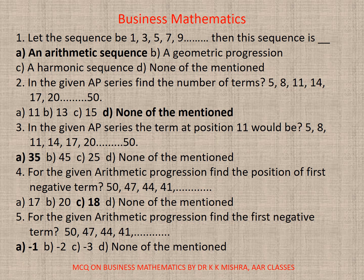Question 4. For the given arithmetic progression, find the position of first negative term: 50, 47, 44, etc. So here if you calculate, you will find 18 as the correct option, C.